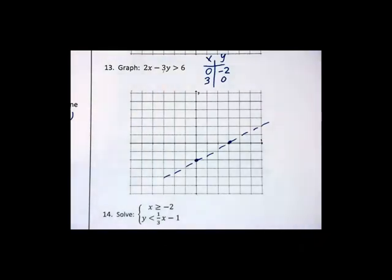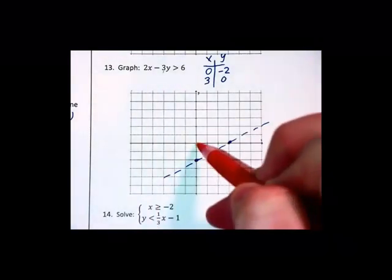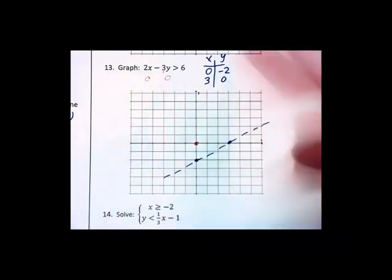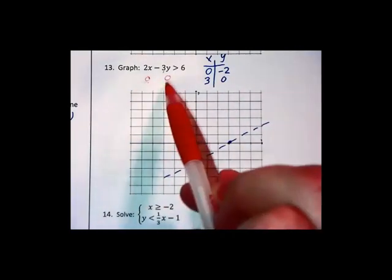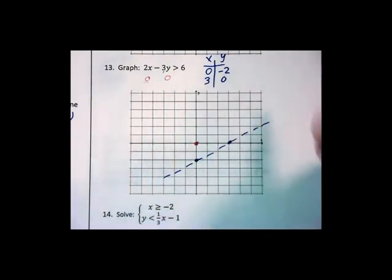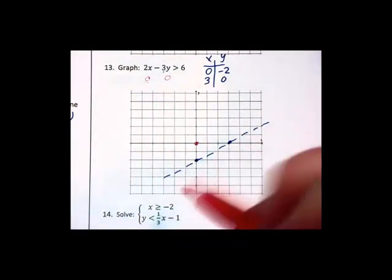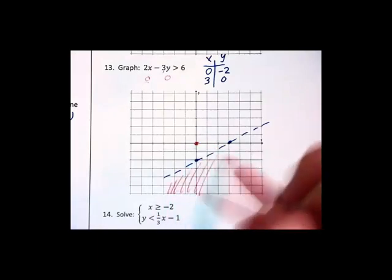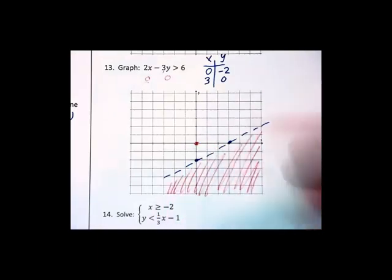So I am going to try a test point such as the origin and see if the origin works. When I substitute in 0, 0, the whole left side zeros out and we get 0 bigger than 6. 0 bigger than 6 is a false statement. So 0, 0 is not part of the solution set and I really should be shading on the other side of the line.